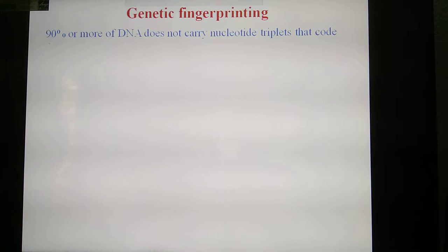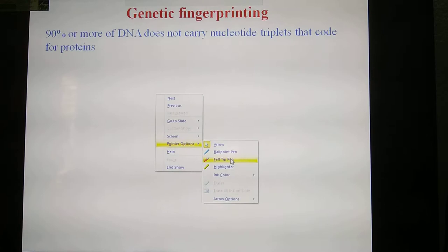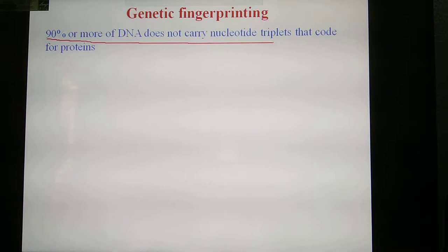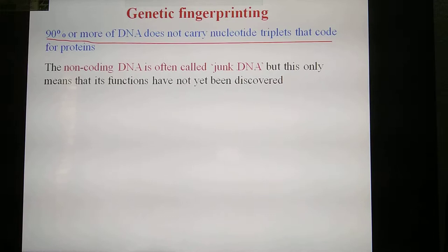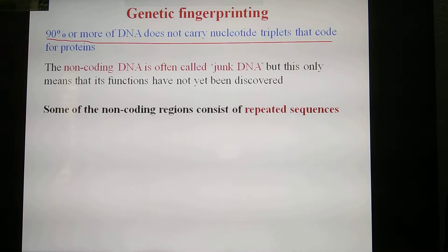Next point, DNA fingerprint. 90% or more of DNA does not carry nucleotide triplets that code for proteins. The non-coding DNA is often called junk DNA. How do you call junk DNA? Non-coding. Very important. Some of the non-coding regions consist of repeated sequences of nucleotides.